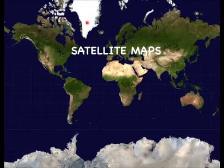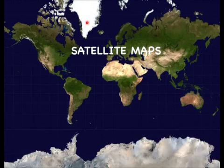We can gather a lot of information about our Earth from satellite maps. We can see where we have weathering and erosion taking place, and we can also gather information about human activity and where deforestation is taking place. So satellite maps have become an important tool for us to study the Earth and what is happening to it, either through nature or through human activity.